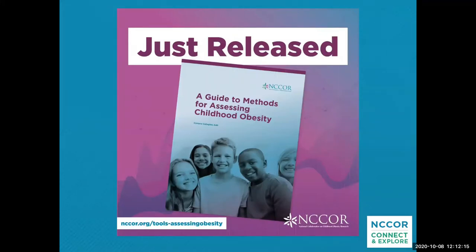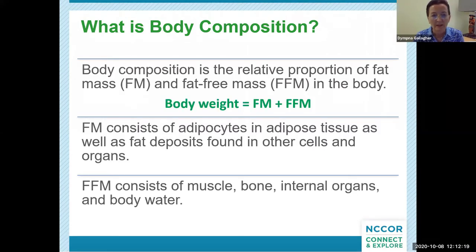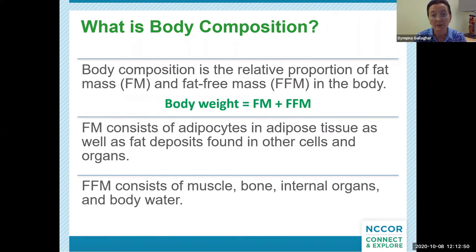Good afternoon, everyone. So what is body composition? To understand the assessment of adiposity, we first need to start with body composition. Body weight as measured on a scale is essentially the sum of fat mass and fat-free mass. Body composition is the relative proportion of fat mass and fat-free mass in the body. Fat mass is made up of adipocytes or fat cells in adipose tissue, in addition to fat deposits found in various other cells and organs. Fat-free mass consists of muscle, bone, and internal organs, as well as body water compartments.